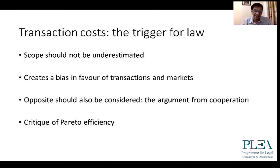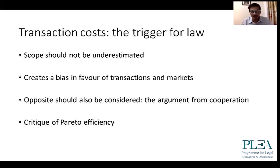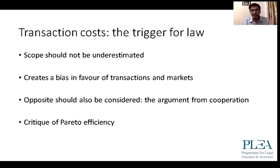Regarding Pareto efficiency — if you make somebody better off without harming anyone else, that seems like a good measure. You will immediately recall this logic is present in the Citizenship Amendment Act: it gives benefits regarding citizenship or naturalization to members of certain religious groups, but excludes others. This sort of choice — benefiting some people without apparently harming others — might seem Pareto efficient. But this is where the critique of Pareto efficiency is also important and where law and economics needs to develop further.